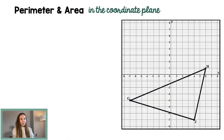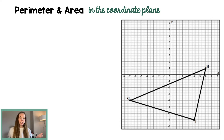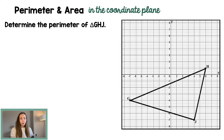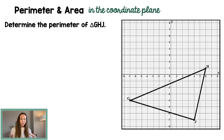Here is the second example on your capture sheet. What you'll notice is that it's a little more challenging because all of these sides are diagonal, so we will need to use either the distance formula or the Pythagorean theorem for each. We're going to determine the perimeter of triangle GHJ. Instead of simply using the distance formula, this time I'm going to build right triangles around the outside so that I can use the Pythagorean theorem to find the length of all the sides.